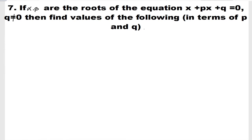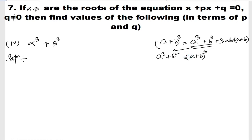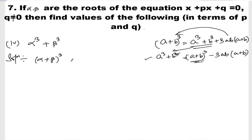Roman number 4: α³ + β³. Using the formula (a + b)³ = a³ + b³ + 3ab(a + b), we get a³ + b³ = (a + b)³ - 3ab(a + b). So α³ + β³ = (α + β)³ - 3αβ(α + β).